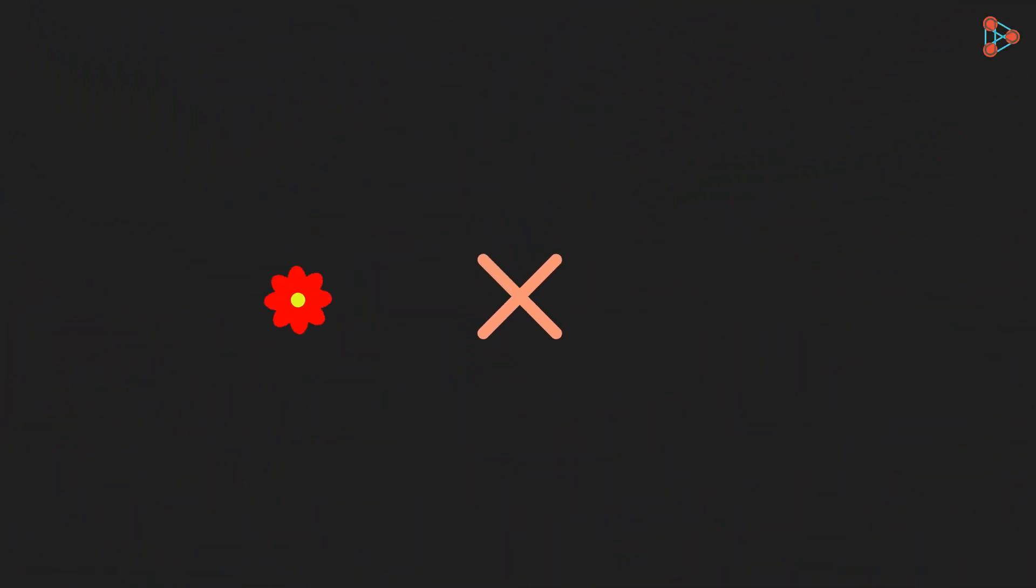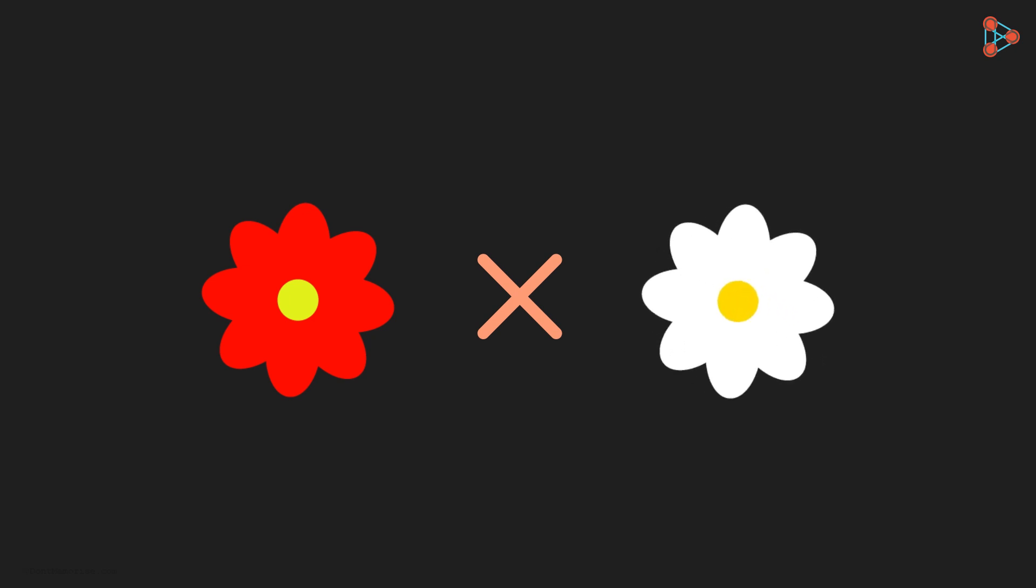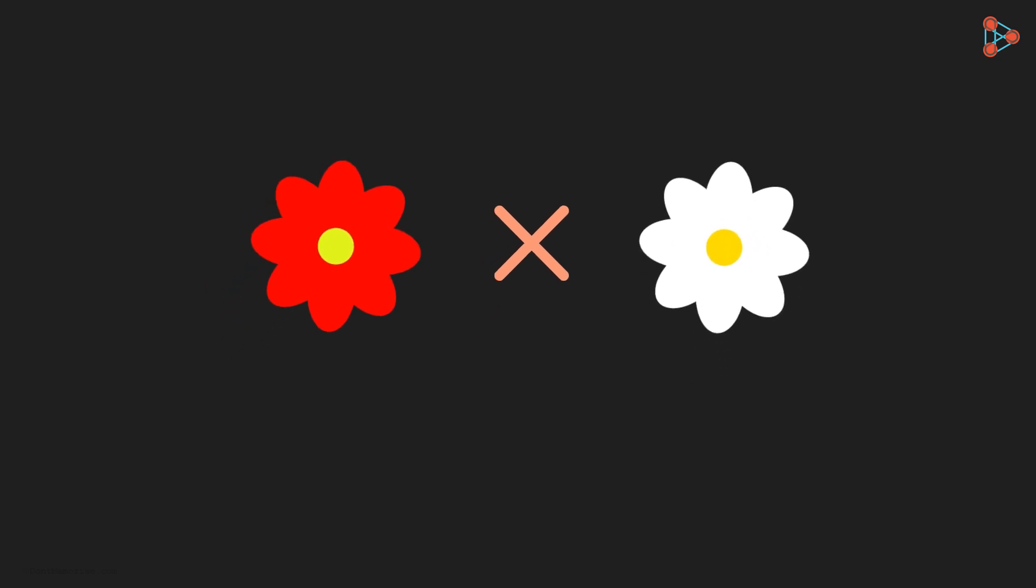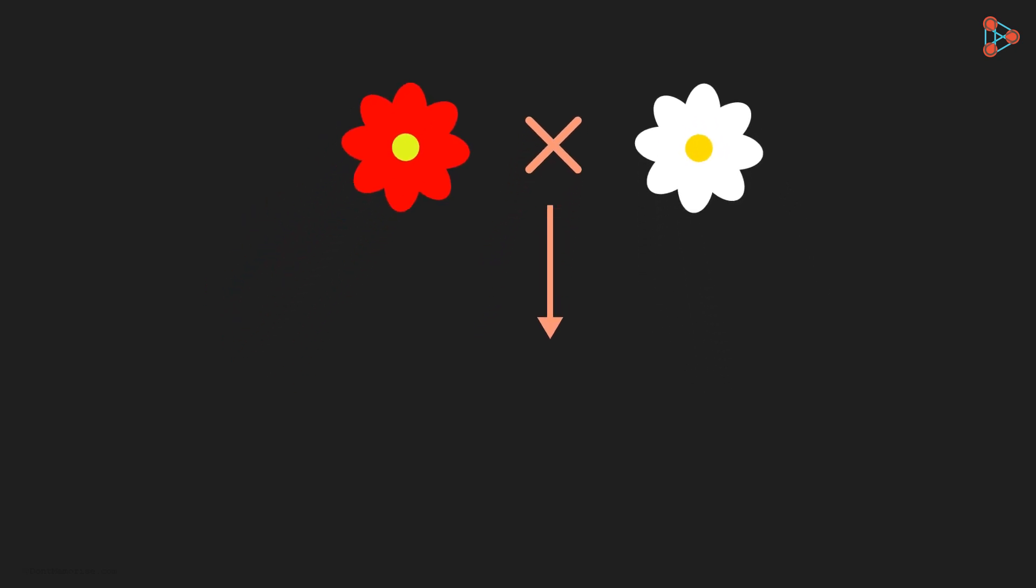Now let me ask you an extremely interesting question! If we cross a plant having red flowers with a plant having white coloured flowers, then is there a possibility to obtain an intermediate flower colour like pink?